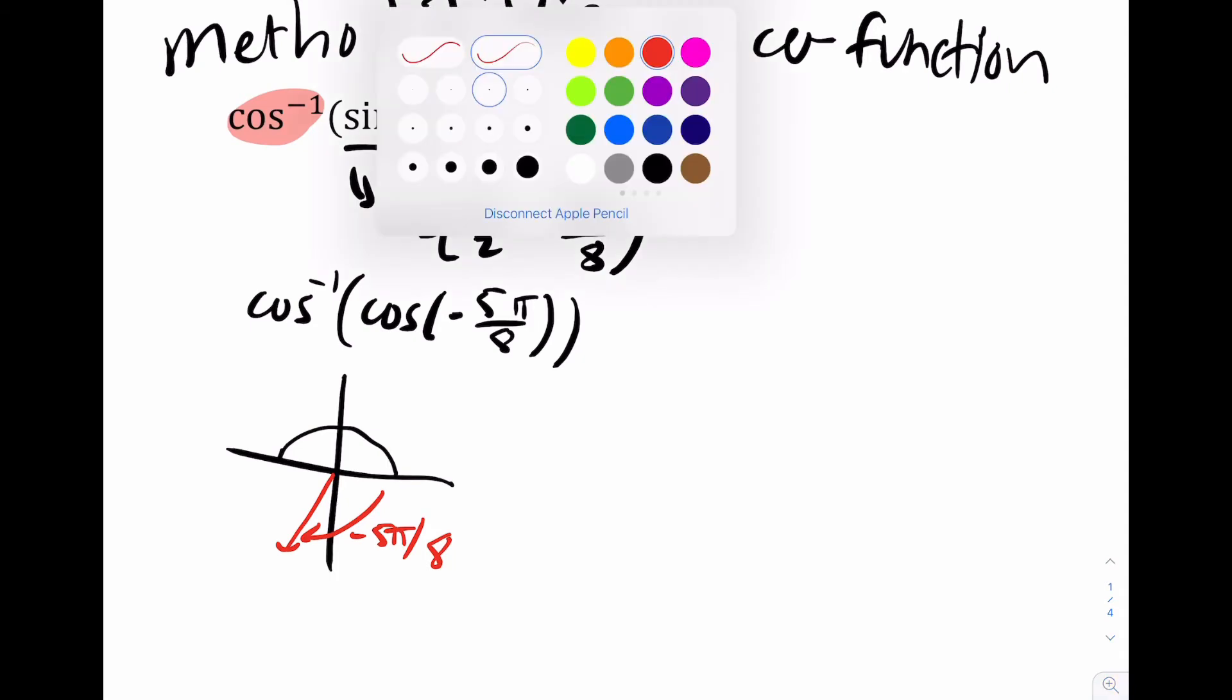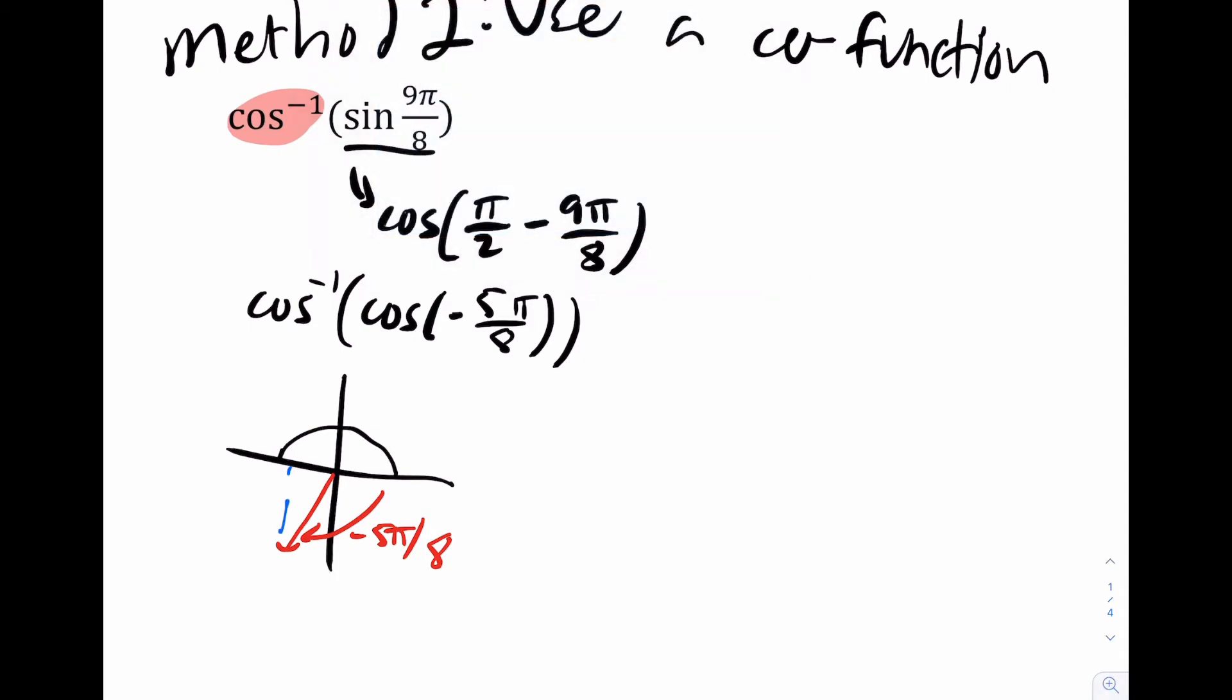You can see we're not in the range. So reflect it over the x-axis. Boom, we're in the range. Our new angle is five pi over eight, which is our answer. Five pi over eight.